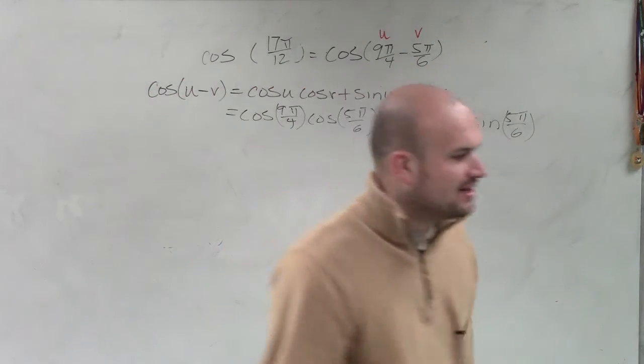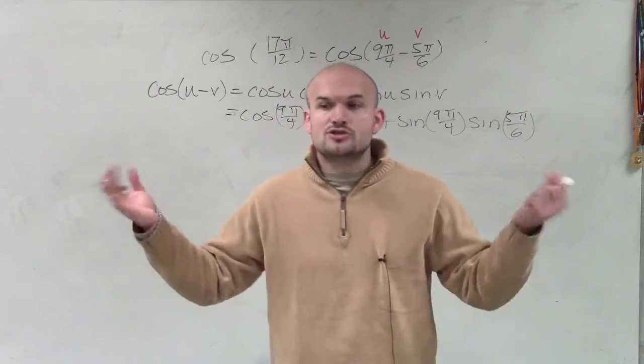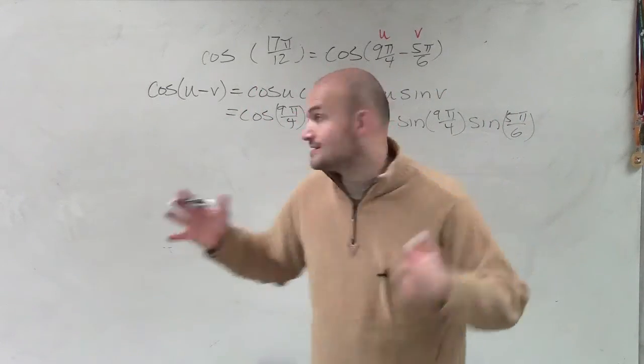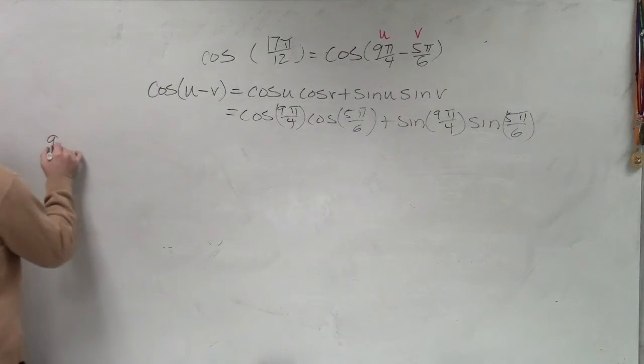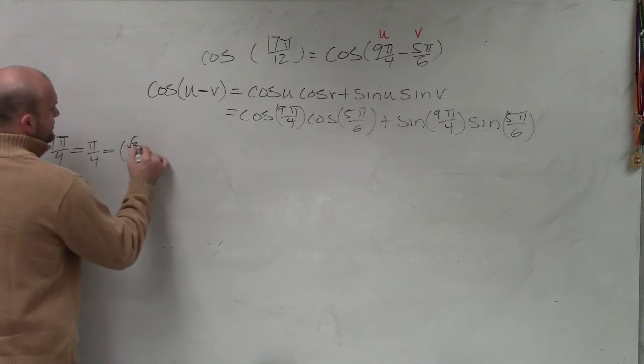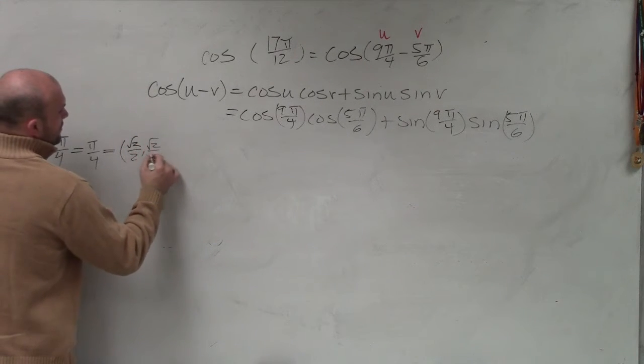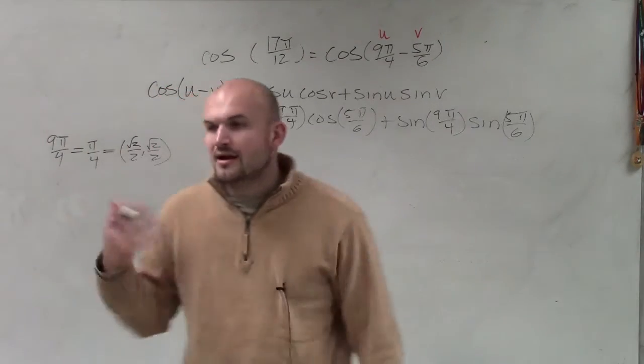Last problem, I already showed you guys how to evaluate for those two angles. So we're all in good understanding that the coordinate points for 9π over 4, we rewrote that as π over 4, which gave us the coordinate point of square root of 2 over 2, comma, square root of 2 over 2. Is everybody in agreeance with that on the unit circle?